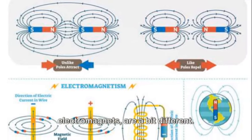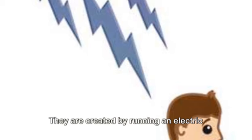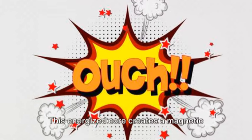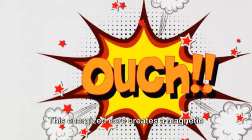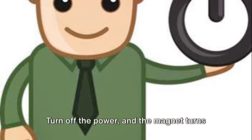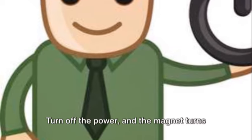The third type, electromagnets, are a bit different. They are created by running an electric current through a coil with a metal core. This energized core creates a magnetic field, but only as long as the electric current is on. Turn off the power, and the magnet turns off too.